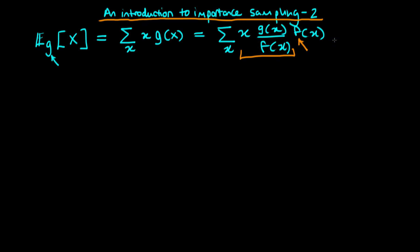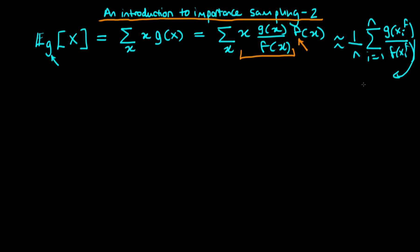We can approximate this using Monte Carlo sampling as 1 over n times the sum from i equals 1 to n of g(x_i^f) over f(x_i^f) times x_i^f, where n is our sample size. The first part of the expression is what we refer to as an importance weight. The superscript tells us what distribution the x's came from — here sampled from f. This is handy because if we can't sample from g but can work out the ratio of g to f, and can sample from f, we can still learn properties of g.